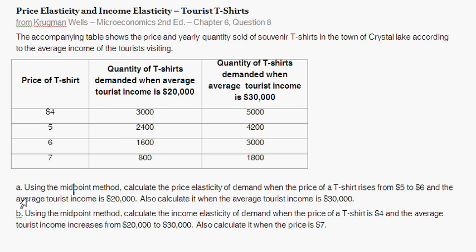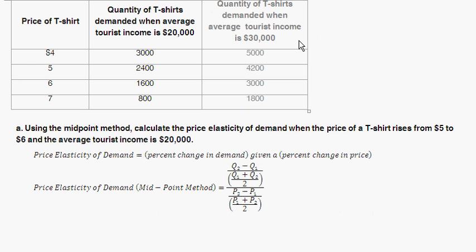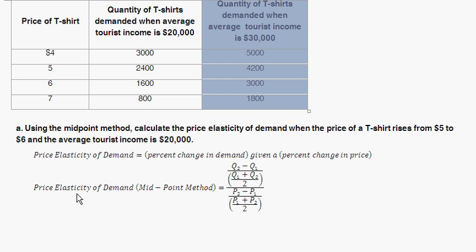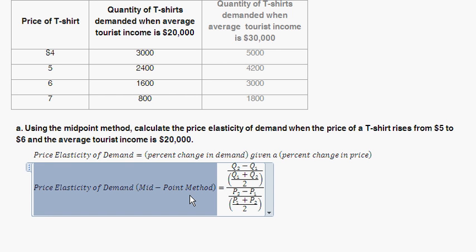Question A asks — there are two parts. The first part: using the midpoint method, calculate the price elasticity of demand when the price of a t-shirt rises from $5 to $6 and the average tourist income is $20,000. So we're dealing with just people earning $20,000. Price elasticity of demand is the percent change in demand given a percent change in price — how much demand changes given a change in price. And we're told to use the midpoint method.